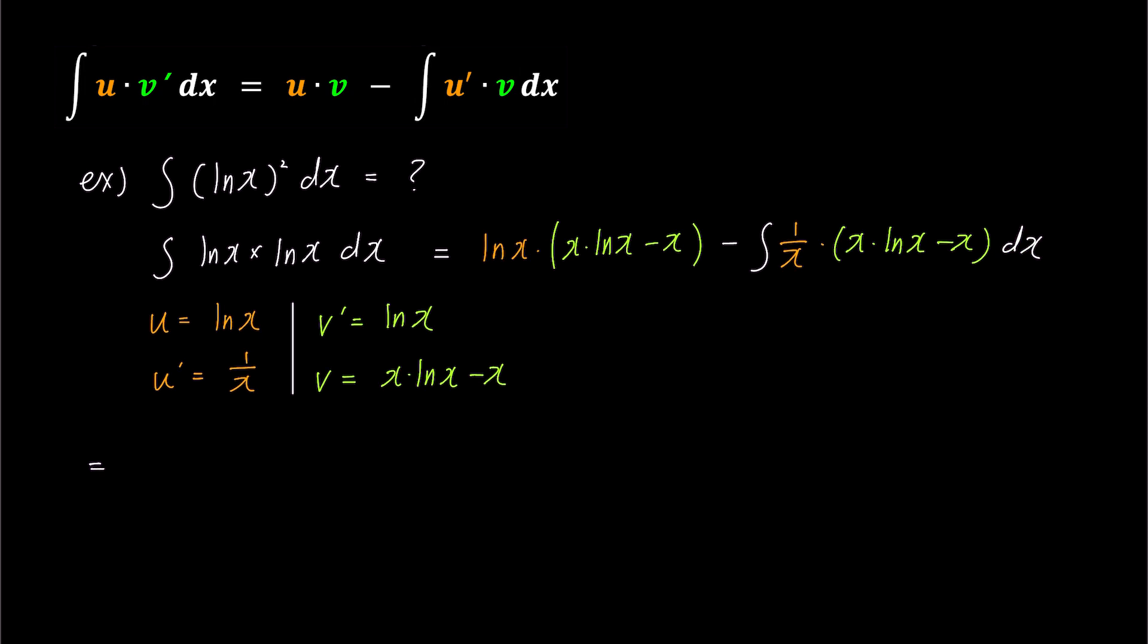Expanding the first bracket in the expression, we get x times ln(x) squared minus x times ln(x). And expanding the parenthesis inside the integral becomes minus integral of ln(x) minus 1 dx.